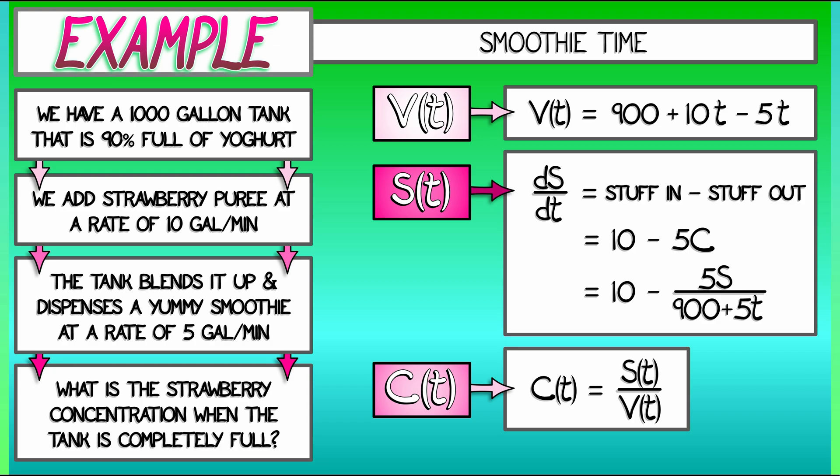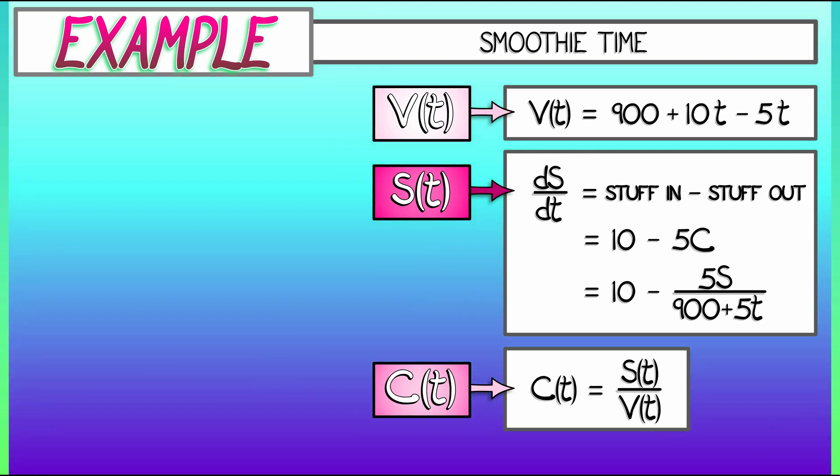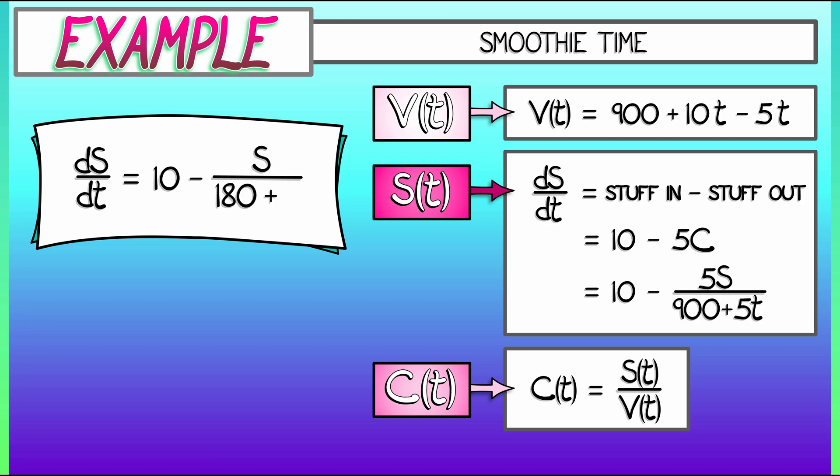Now, if we simplify that, rearrange that a little bit, I think I can divide through by 5, I'm going to get a final form for dS/dt as 10 minus S over 180 plus t. That's our differential equation. Let's solve it.